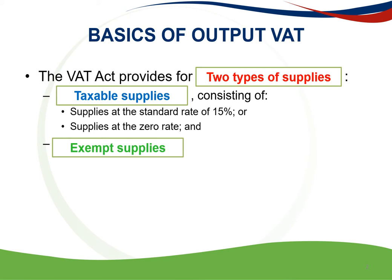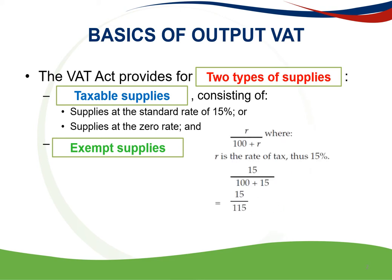The tax fraction is the fraction calculated in terms of the following formula. In order to calculate the VAT component of taxable supplies at the standard rate, it's necessary to apply the tax fraction to the consideration of such supplies. Therefore, R over 100 plus R, where R is the rate of tax — that's 15% — gives you 15 over 100 plus 15, which is 15 over 115.